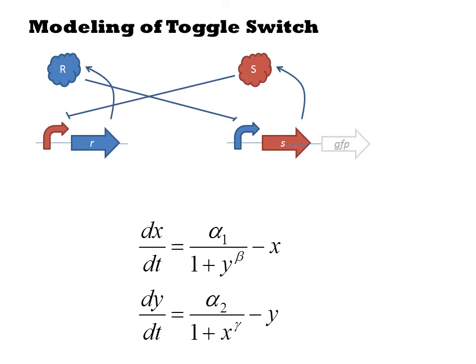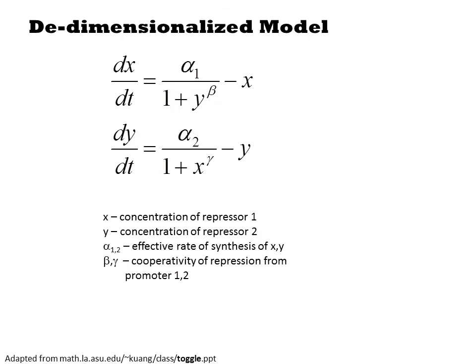The de-dimensionalized version of these equations is described in the paper. They call them U and V in the paper, but we'll call them X and Y. Just to reorient you, let's go back through these variables. X and Y are the concentrations of repressor 1 and 2. The alpha terms are the synthesis rate of X and Y. Beta and gamma are the cooperativity of the repression from promoter 1 and 2, which usually will have the value of 2 since usually these repressors function as dimers.